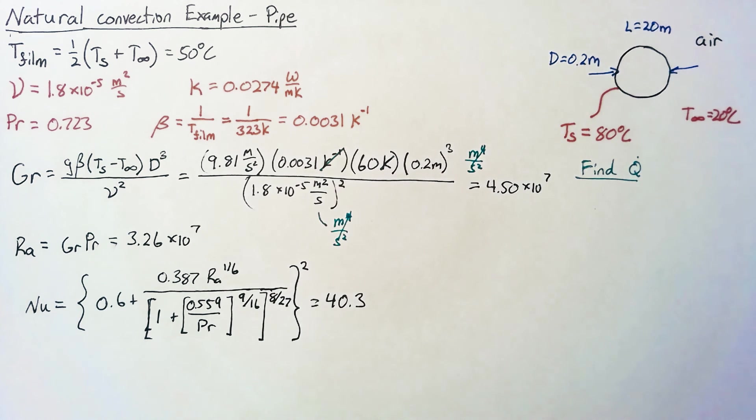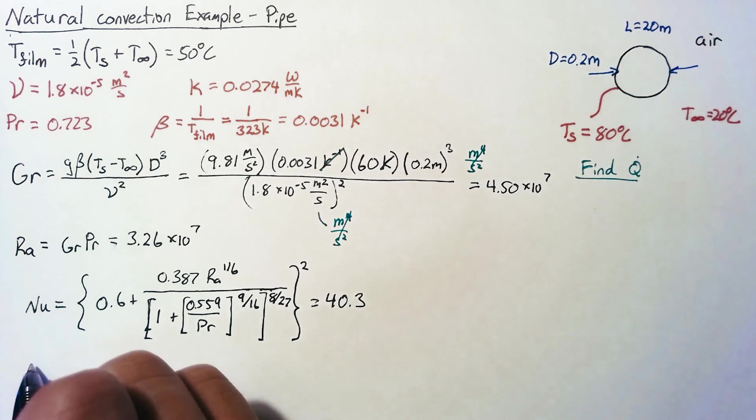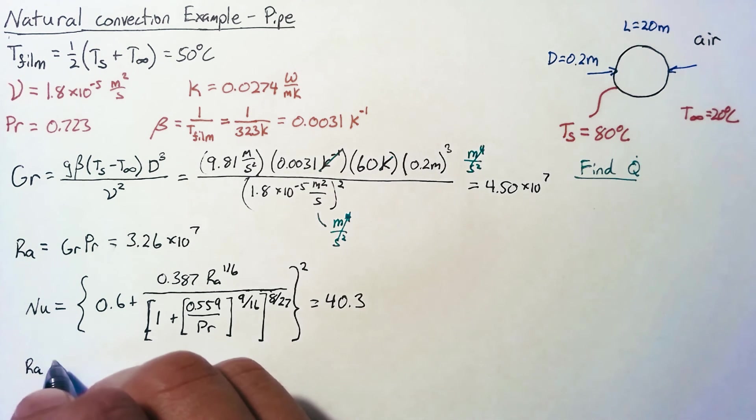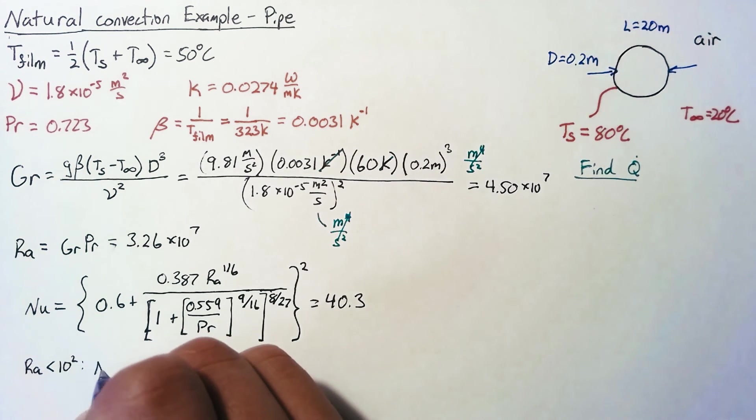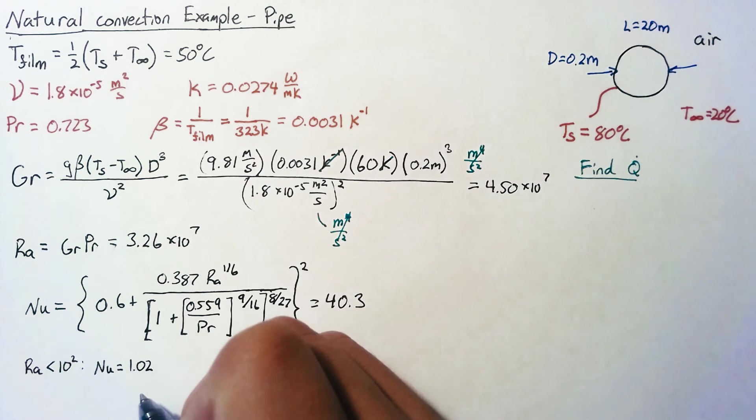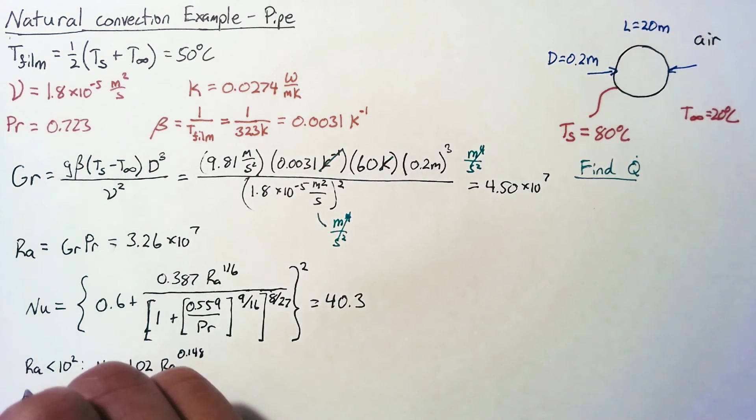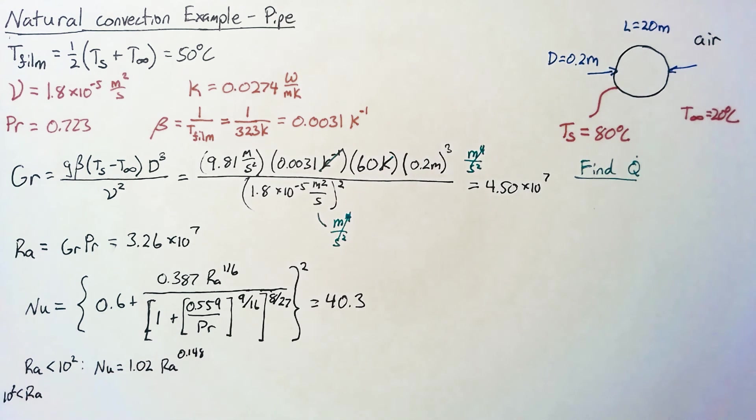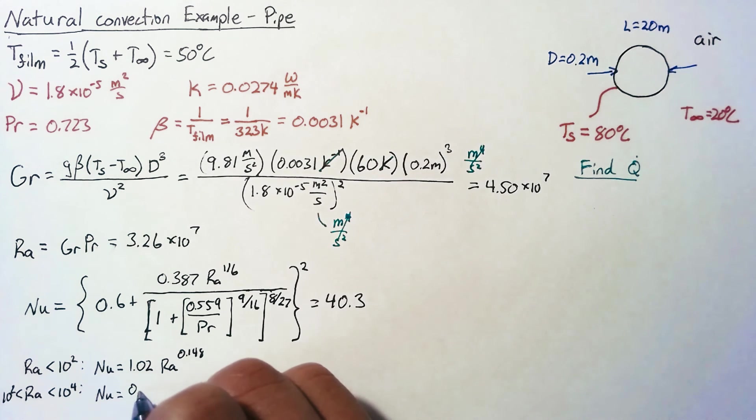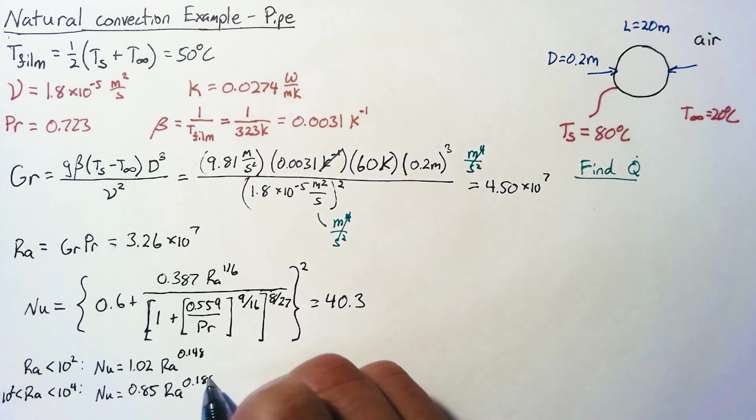Now, that being said, there's also a piecewise function that serves the same purpose and is a lot simpler. It's less accurate, but it can still do a pretty good job. The piecewise function says that if our Rayleigh number is less than a hundred, then our Nusselt number is 1.02 times the Rayleigh number to the 0.148. If our Rayleigh number is between 100 and 10,000, then our Nusselt number can be approximated as 0.85 times the Rayleigh number to 0.188.